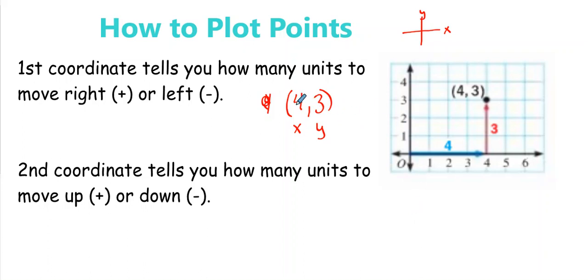So for (4, 3), I go over four — one, two, three, four — and then count up one, two, three. You just put the point there. If you notice, that point where (4, 3) is, it's where those two grid lines meet — it's not in the box, it's where they meet.